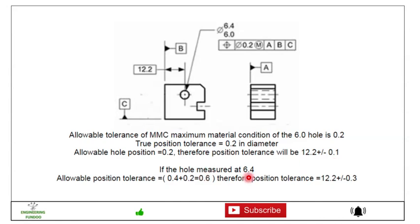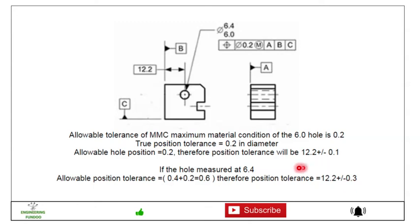If the hole is measured at 6.4, the allowable position tolerance is 0.4 plus 0.2, which equals 0.6. Therefore the position tolerance will be 12.2 plus or minus 0.3, and plus or minus 0.1. Here you can see it is referenced with datum A, datum B, and datum C.